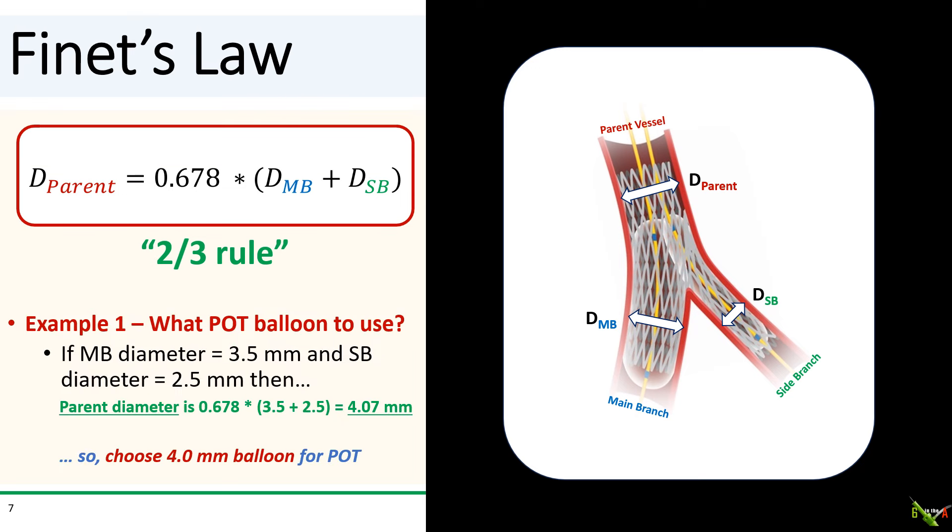So how do you use Finet's law? Well, suppose you were trying to figure out what POT balloon you needed to use in a bifurcation case. Well, in this case, if your main branch is 3.5 millimeters and your side branch is 2.5 millimeters, then by Finet's law, the parent vessel diameter should be 4.07 millimeters. So rather than choosing haphazardly, you've now just calculated that you'll need to choose a 4.0 millimeter NC balloon to do your POT.